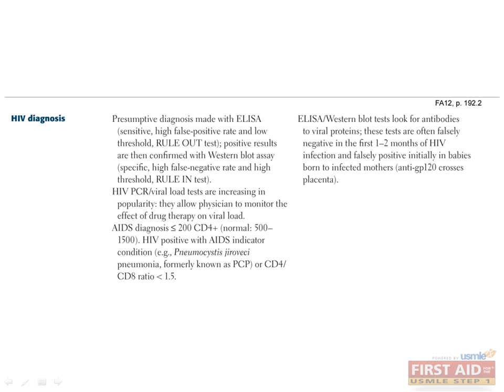Diagnosing HIV begins with initial screening using an ELISA test to detect HIV antigens P24, P17, GP120, or GP41. ELISA is very sensitive but not very specific, so it needs to be confirmed with a highly specific Western blot. HIV infection is confirmed if antibodies to at least two HIV antigens are positive. PCR of HIV DNA is used to determine viral load, monitor treatment efficacy, and screen for HIV infection in newborns of HIV-positive mothers, since there is a high false-positive rate due to maternal antibodies crossing the placenta.